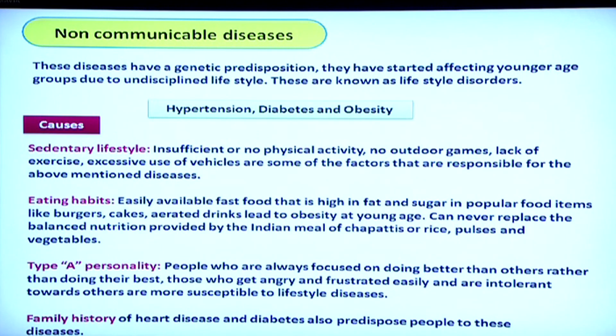Type A personalities — people who want to reach perfection — tend to become more perturbed, tense, and frustrated, leading to hypertensive conditions. There is also family history; certain diseases like heart disease and diabetes run in certain families. To prevent these, one needs proper awareness of the causes of such diseases.